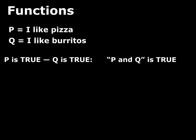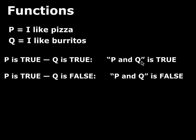Suppose that q is true — I like burritos. This is in fact what the real world is like; I do like pizza and I like burritos. If that's the case, then the compound statement 'P and Q' is true. Now what if I didn't like burritos? So p is true but q is false. Well, then 'P and Q' would be false — that conjunction would be false if I don't like burritos.